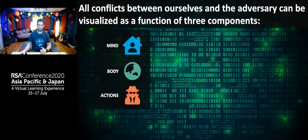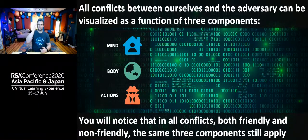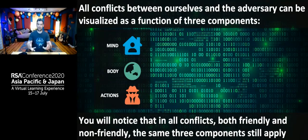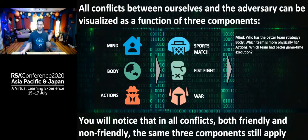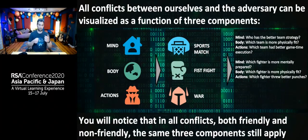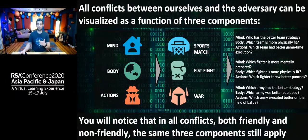These three elements apply to any conflict. Mind refers to psychological components — how well prepared are you? Body consists of actual capabilities — what are my weapons? Actions are literally the execution of actions. In a sports match, the team with the better strategy has the mental advantage, the more physically fit team has the body advantage, and better game-time execution wins on actions. In a fist fight: which fighter is more mentally prepared, more physically fit, threw better punches? In war: which army had the better strategy, was better equipped, executed better on the battlefield? No matter the conflict, you will always see mind, body, and actions.